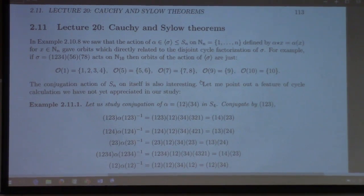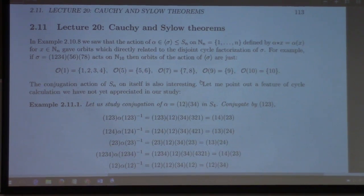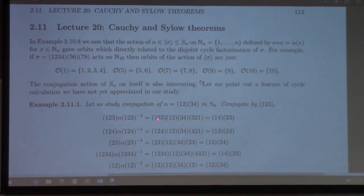What got me thinking about this is yesterday in the help session I made a claim about a previous homework and I realized it was wrong. I had a wrong idea in my mind — I thought if I conjugated by a permutation, it would just leave the cycle unchanged. That's not true. Look what happens. Conjugate alpha by (1,2,3). Of course (1,2,3) inverse is just (3,2,1). So when I multiply these out, I get (1,4)(2,3).